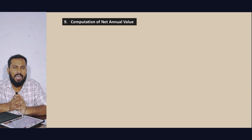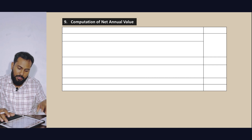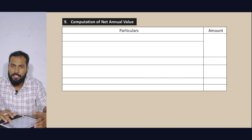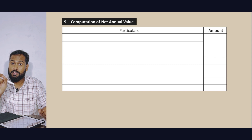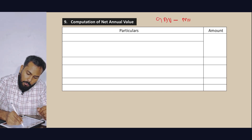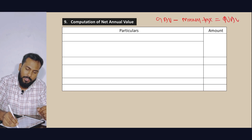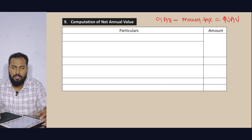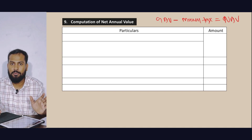The formula is: Gross Annual Value (GAV), minus Municipal Tax, equals Net Annual Value. If you have the gross annual value, you subtract the municipal tax paid to arrive at the net annual value.